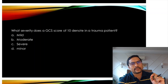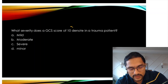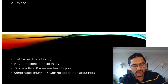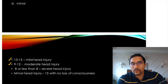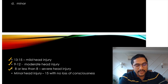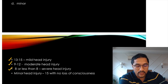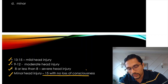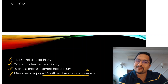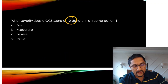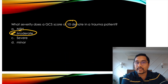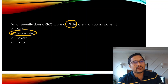GCS is almost routinely asked in all exams. What does a GCS score of 10 denote in a trauma patient? 13–15 is mild head injury, 9–12 is moderate head injury, 8 or less is severe head injury, and minor head injury is 15 with no loss of consciousness. A GCS of 10 denotes moderate head injury.